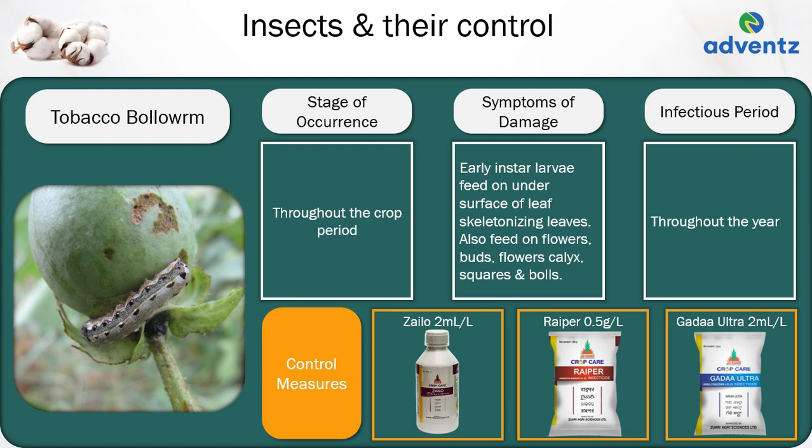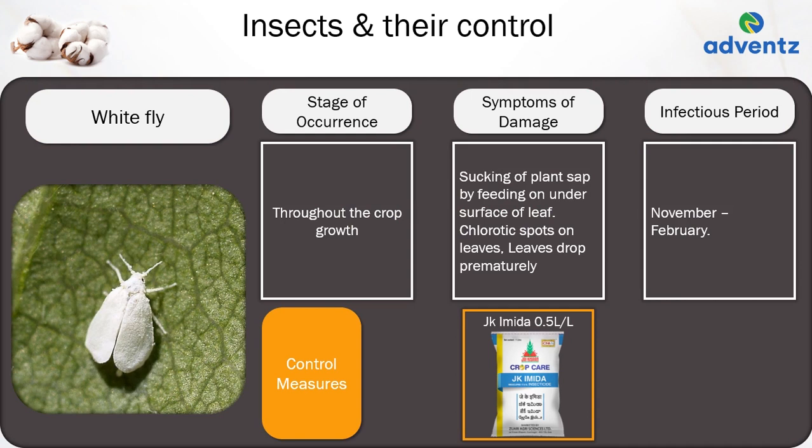The next insect is whitefly. It can occur throughout crop growth. The symptoms of damage are sucking of plant sap by feeding on the under surface of the leaf, causing chlorotic spots on leaves and premature leaf drop. The infectious period of whitefly is between November and February. Control: apply Jai Kisan JK Imida at 0.5 ml per litre.